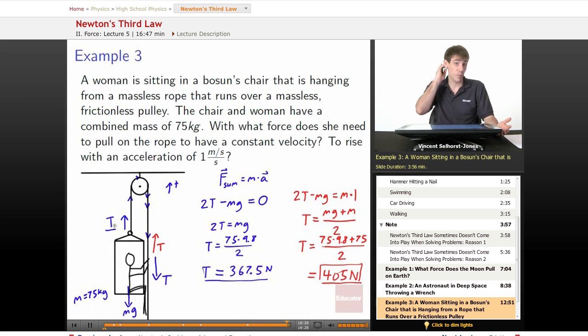She's able to pull with considerably less than her weight. If she's going at a constant velocity, she only has to pull at half her weight. That's a really clever way to use less effort to be able to go up. We're able to take advantage of the way that physics works.